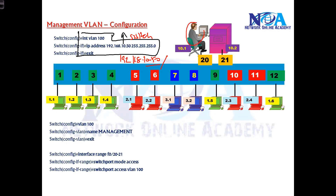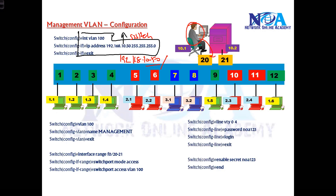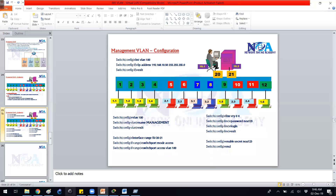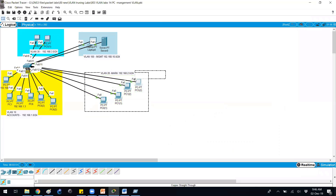I'll go to one of the PCs and try to telnet. For telnet we also need to configure the VTY password, so I'm going to configure the VTY password and enable password for verifying telnet access. The management VLAN is just like any normal VLAN — the configuration commands are the same — but the difference is we use this VLAN dedicated for management purposes only.